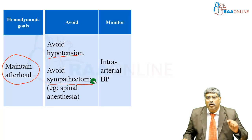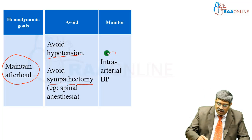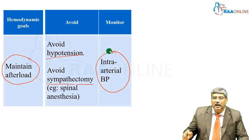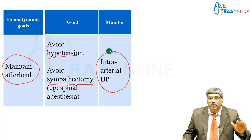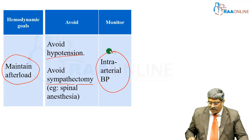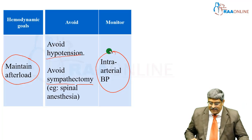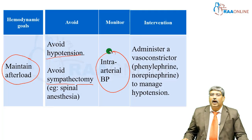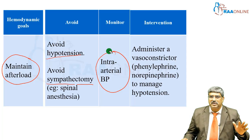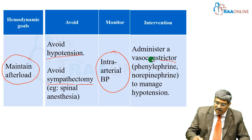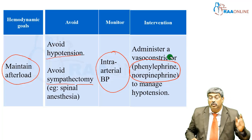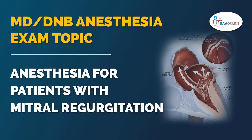For monitoring, you need to have an invasive arterial line to monitor blood pressure, because pressure drops can be drastic. If pressure drops occur, you have to use a vasoconstrictors to manage the hypotension.